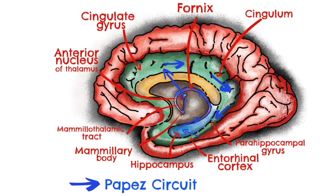So what do we use the Papez circuit for? It's involved in memory, in particular episodic memory consolidation. This is the kind of memory that you can recall due to its context — for example, when you're trying to remember something in an exam, you may be able to picture where you were when you first learnt that information, or maybe an emotion you felt during the time of learning it. That's episodic memory, and it can be likened to mental time travel. And you can thank your Papez circuit for that.